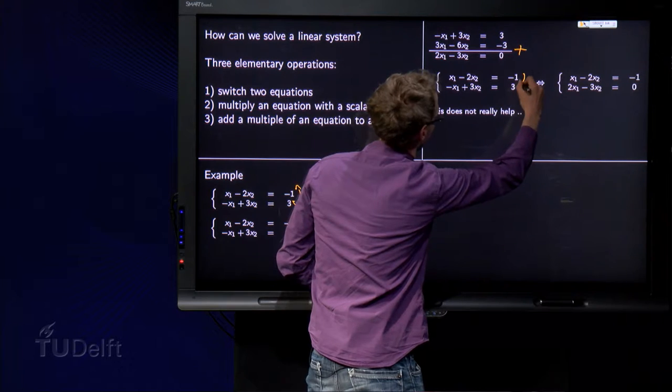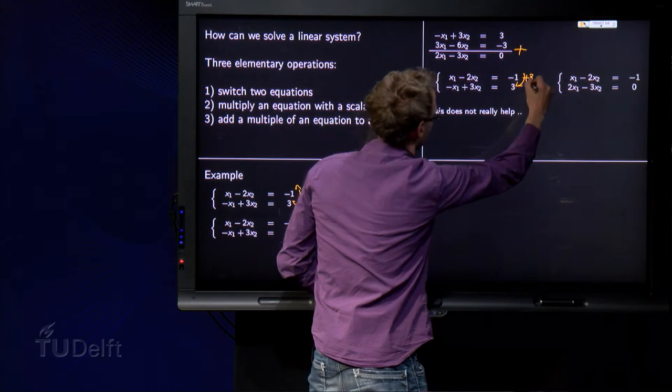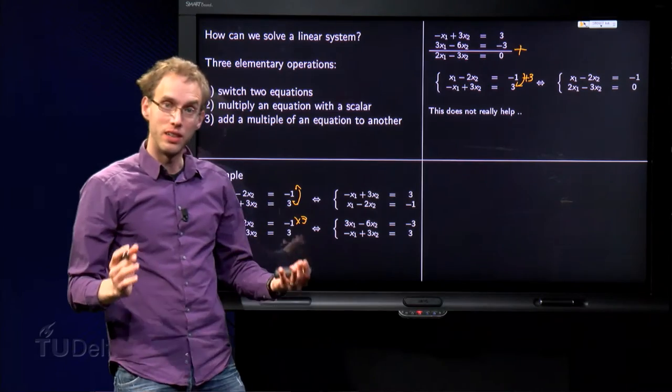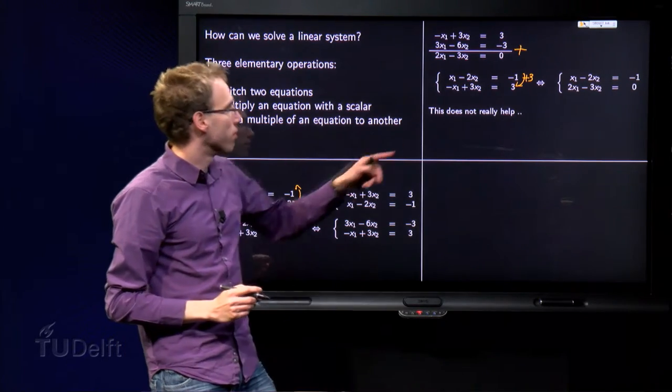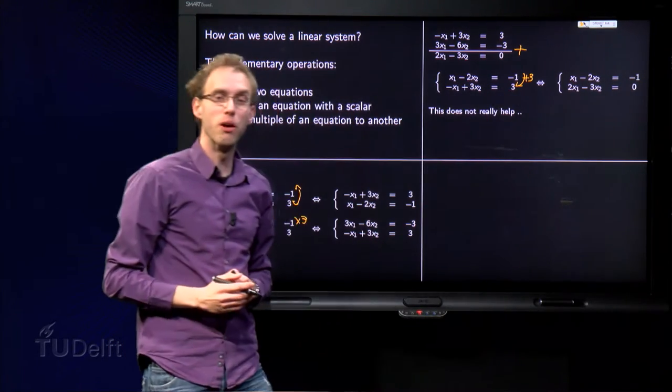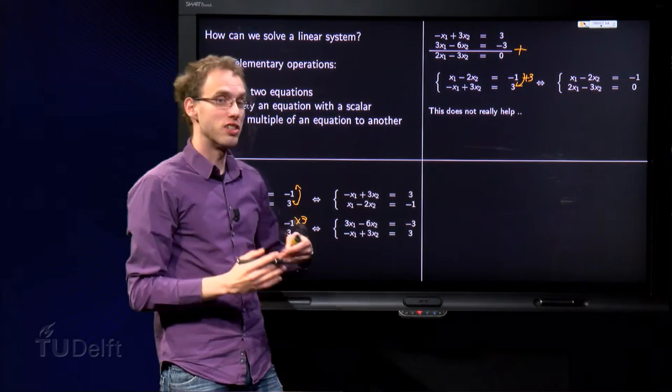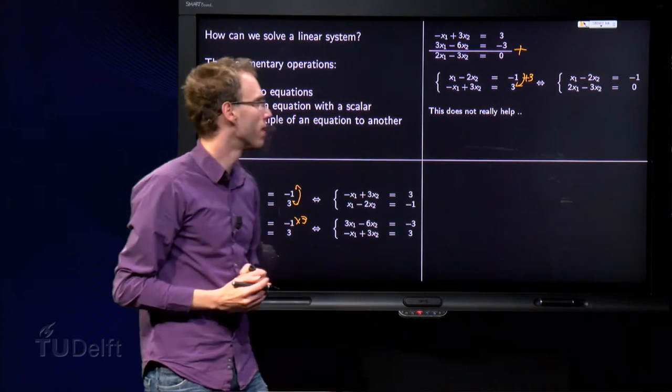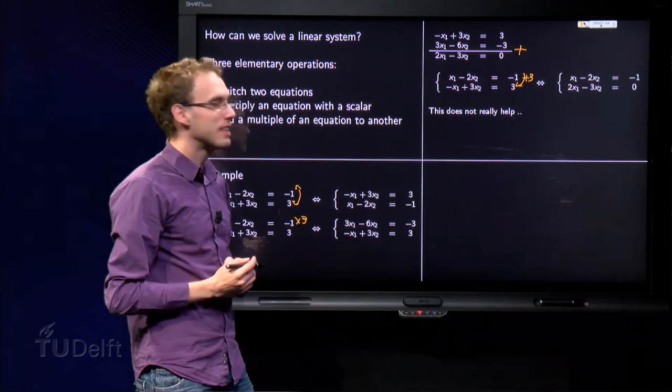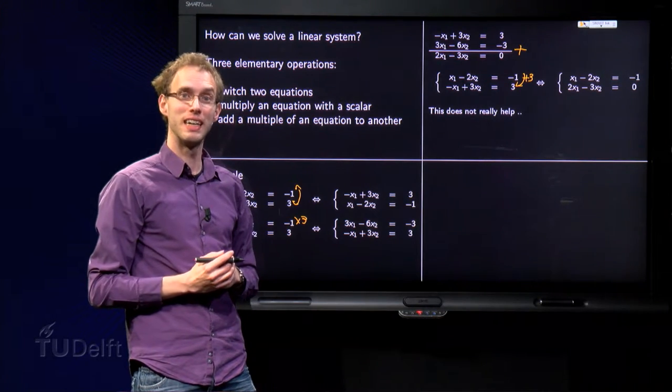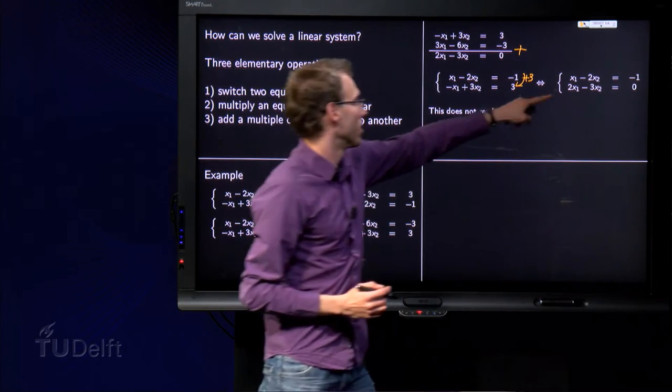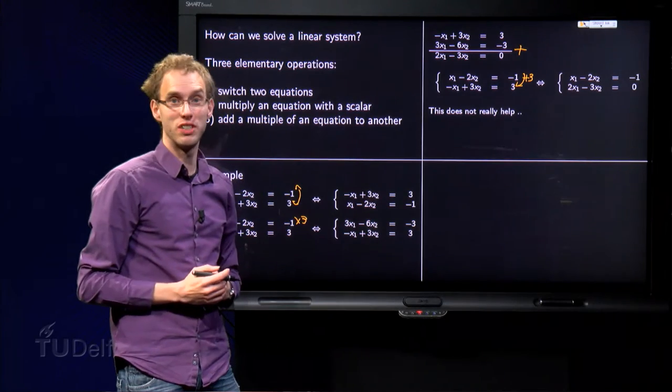We get a new system of two equations and two unknowns which has the same solution set as the first system. This doesn't really help yet, because we still cannot see the solution of this system. However, we can be a bit smarter.